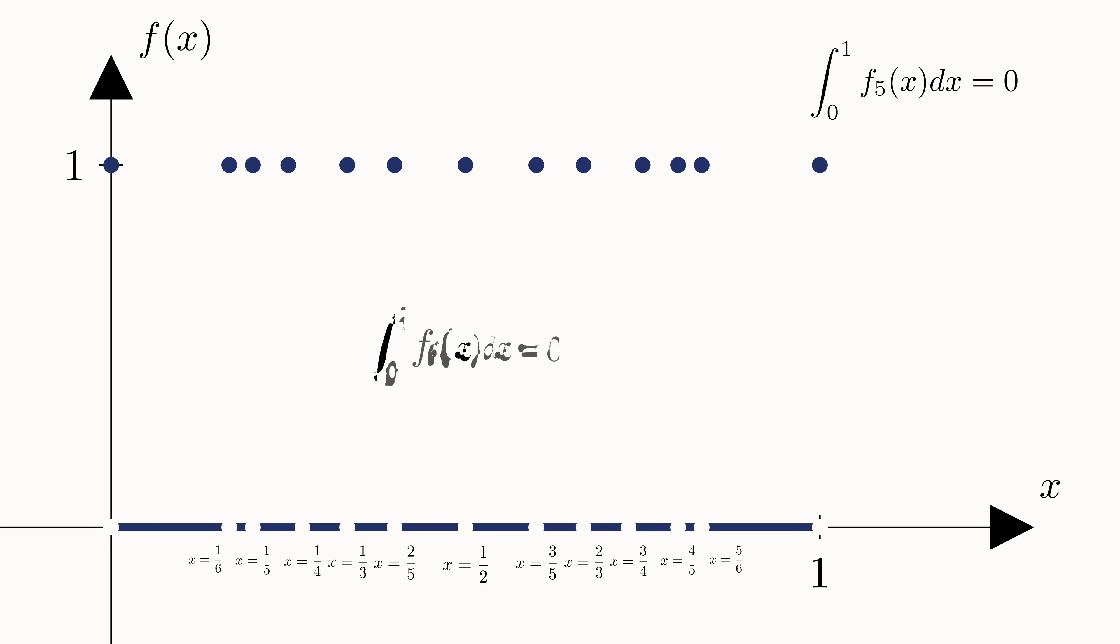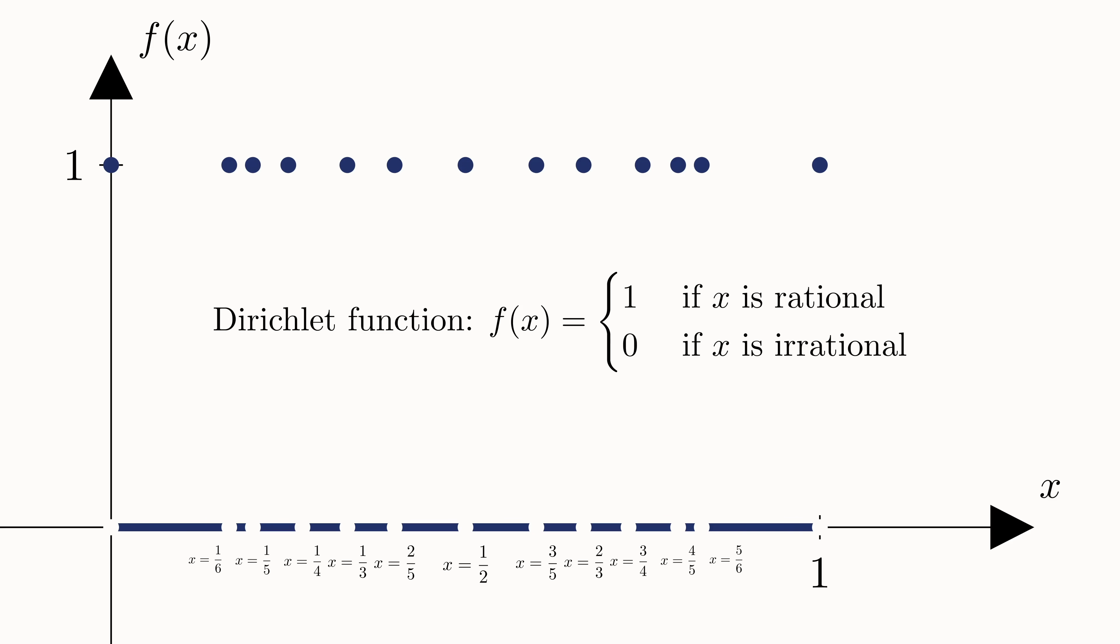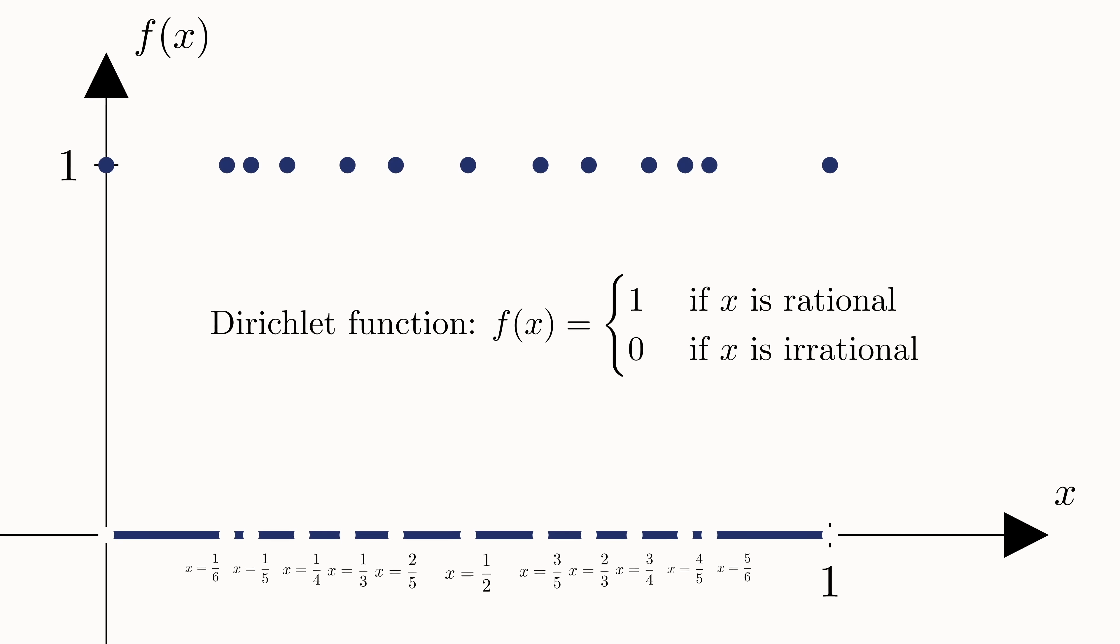But as the limit approaches infinity, this sequence of functions converges to the Dirichlet function, a function that equals one for every rational point and zero for every irrational point. The Dirichlet function is impossible to integrate with the Riemann integral. This is because both the rationals and the irrationals are packed incredibly tightly in the real number line. The technical term is that they are dense in the reals.